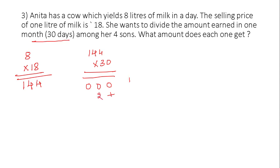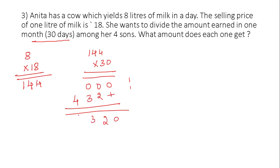3 fours are 12, carry 1. 3 fours are 12, plus 1 is 13, write 3 carry 1. 3 ones are 3, plus 1 is 4. So the result is 4320 rupees in 30 days.